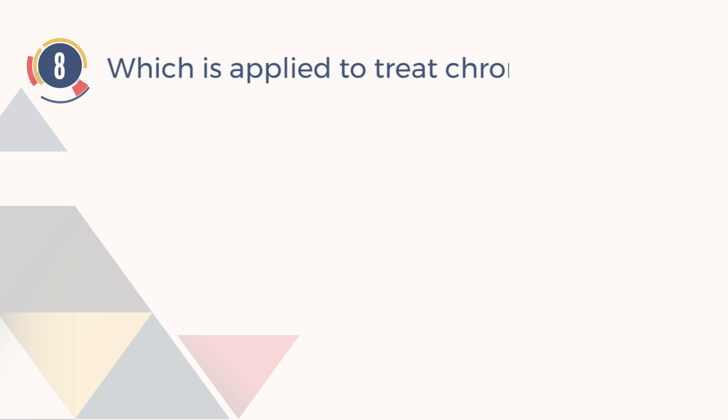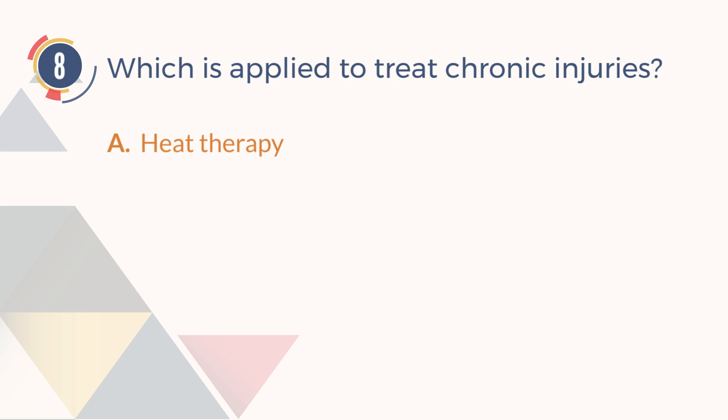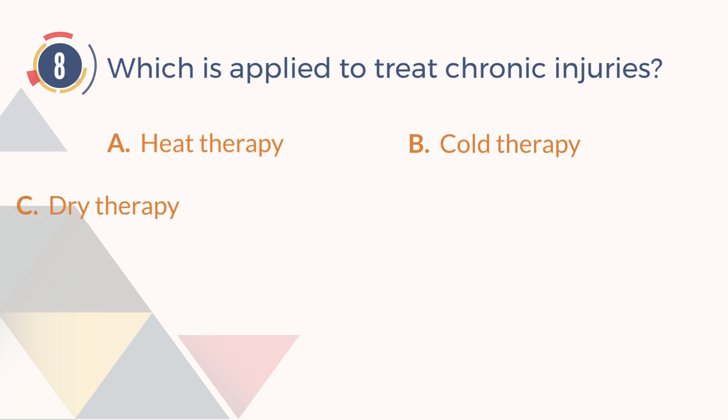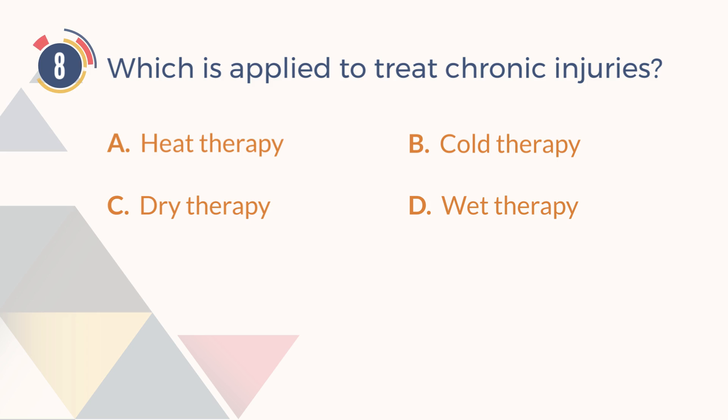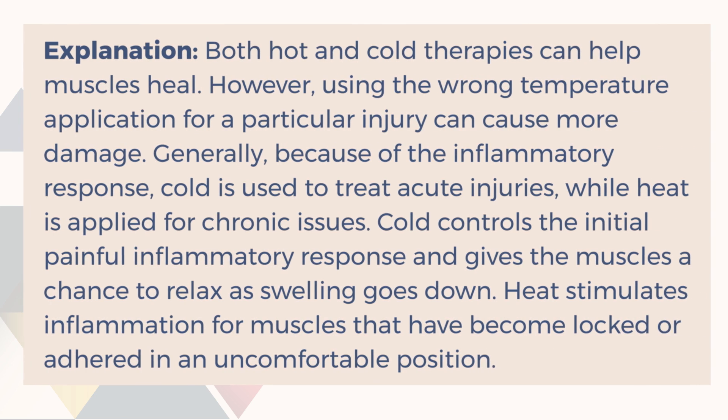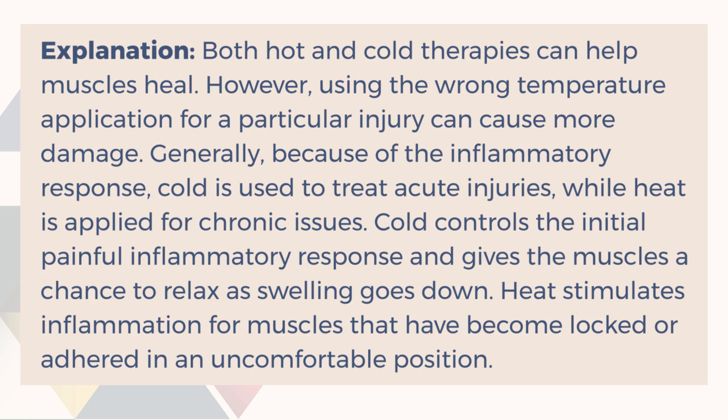Number 8. Which is applied to treat chronic injuries? A. Heat therapy. B. Cold therapy. C. Dry therapy. D. Wet therapy. The answer is A, heat therapy. Both hot and cold therapies can help muscles heal. However, using the wrong temperature application for a particular injury can cause more damage. Generally, because of the inflammatory response, cold is used to treat acute injuries, while heat is applied for chronic issues. Cold controls the initial painful inflammatory response and gives the muscles a chance to relax as swelling goes down. Heat stimulates inflammation for muscles that have become locked or adhered in an uncomfortable position.